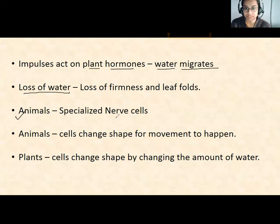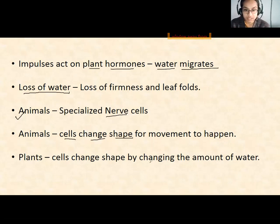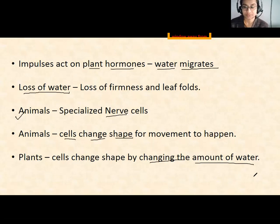Comparing this with animals: in animals, there are specialized nerve cells through which signals go to the nervous system — the brain and spinal cord — and cells change their shape to produce movement. But for plants, movement happens through a change in the amount of water in the sensitive part called pulvinus. This water change causes the plant to move. Hope this was easy to understand — thank you for your time.